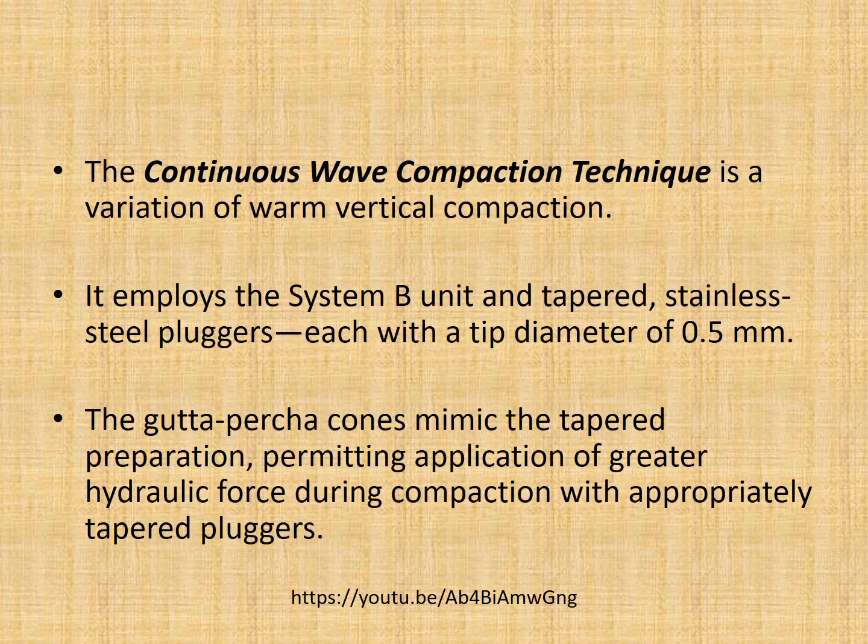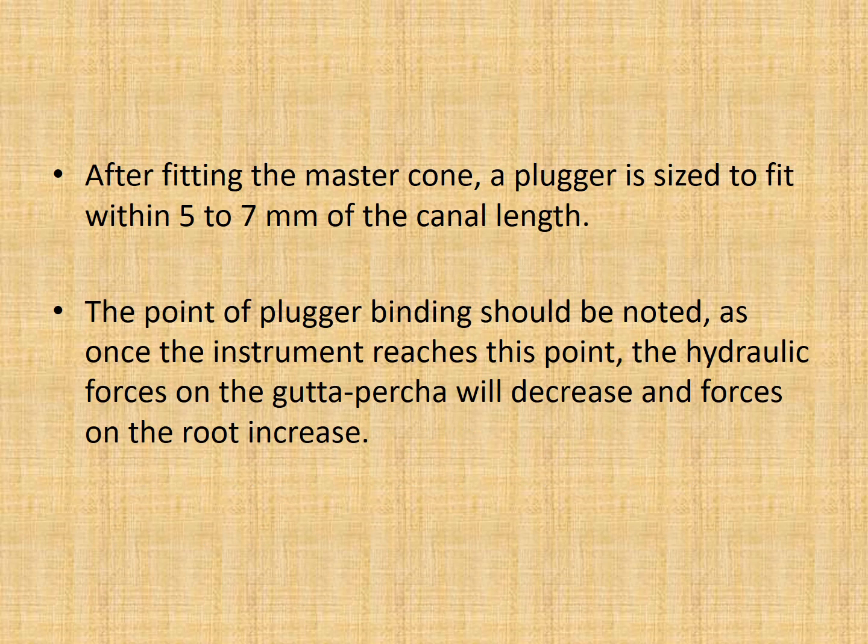The next technique is continuous wave compaction, which is a variation of warm vertical compaction. Here we employ a System B unit and tapered stainless steel pluggers with a tip diameter of 0.5 mm. The gutta percha cones mimic the tapered preparation, permitting application of greater hydraulic forces during compaction with appropriately tapered pluggers. After fitting the master cone, a plugger is sized to fit within 5-7 mm of the canal length. The point of plugger binding should be noted, as once the instrument reaches this point the hydraulic force of the gutta percha will decrease and the forces on the root will increase.